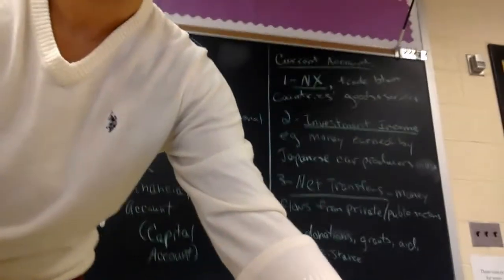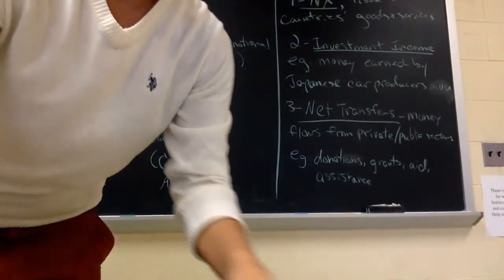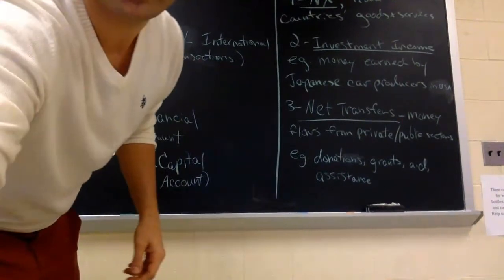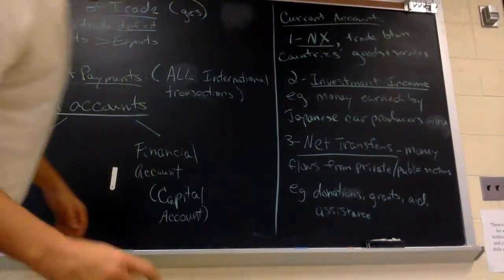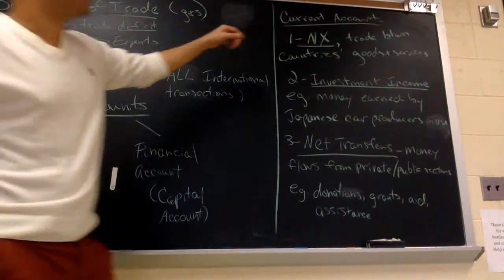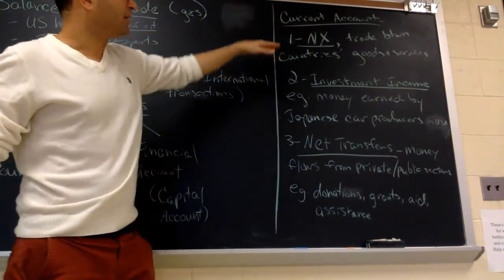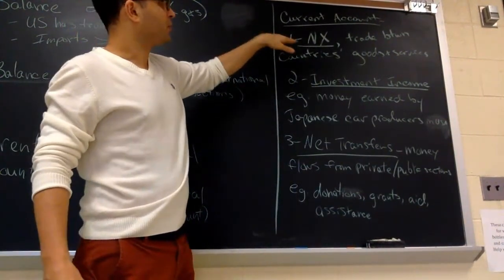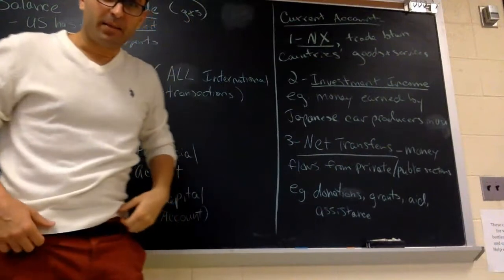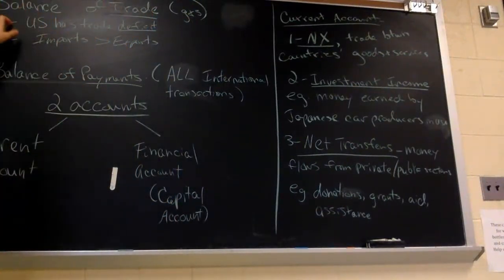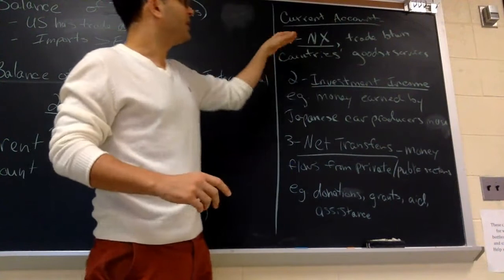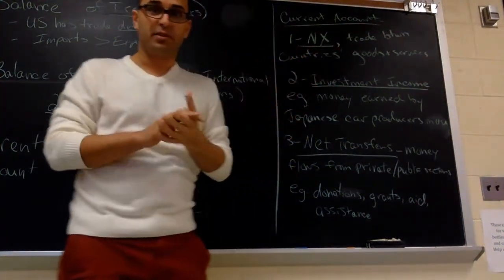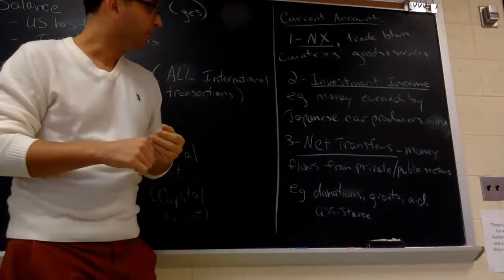The current account has three components. The first one is net exports. That might be a little confusing — you might say, wait, net exports is the balance of trade. Just hang with me here. Net exports is trade between countries, goods and services, so that has to do with your current account.